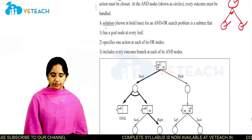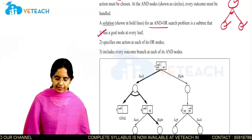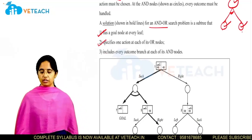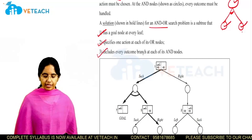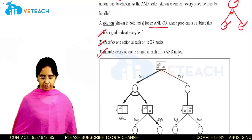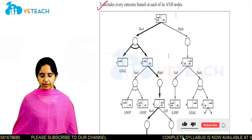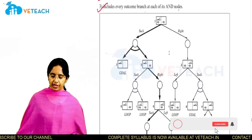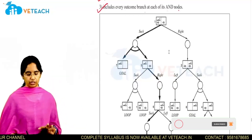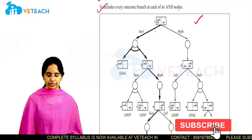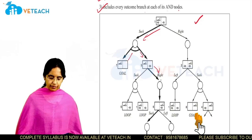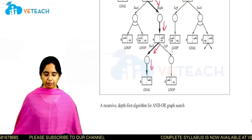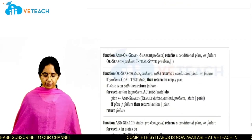A solution for an AND-OR search problem is a subtree that has a goal node at the leaf nodes. It specifies one action at each OR node and includes every outcome branch at each AND node. For the vacuum cleaner problem, this is the AND-OR graph, where all bold nodes present try to move toward the goal state or help find the solution.